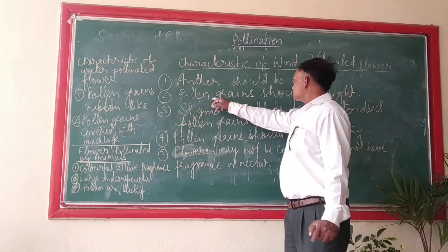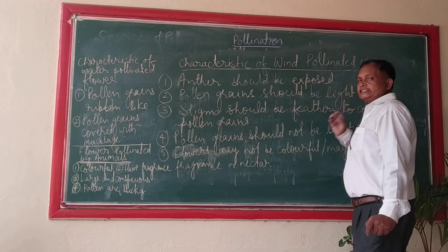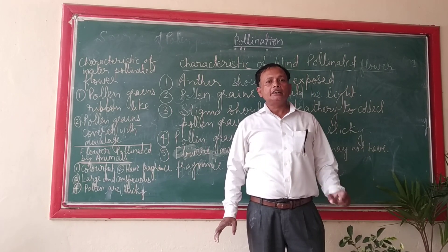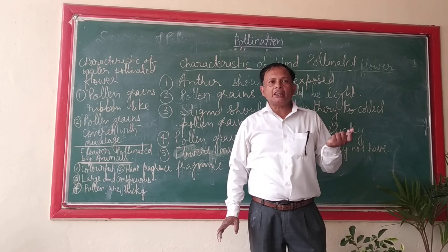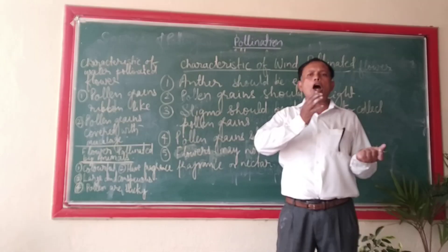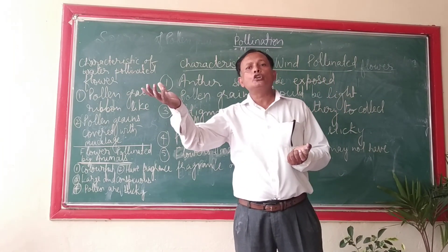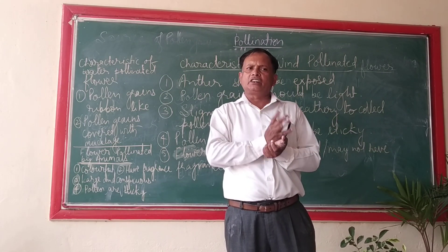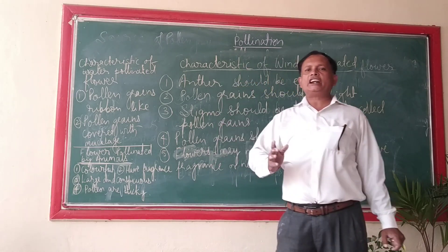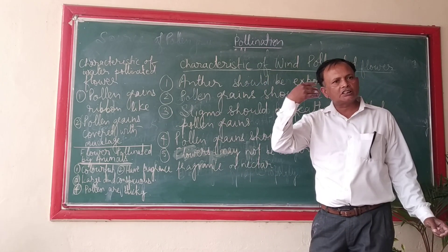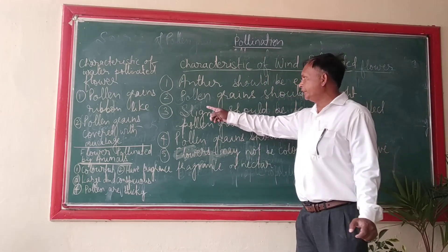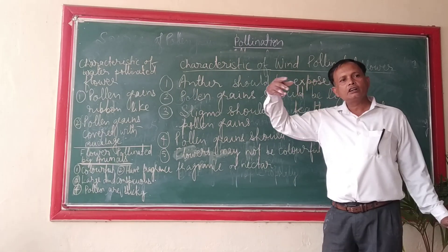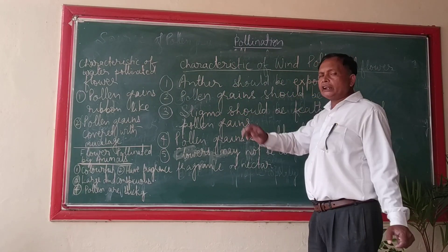The second characteristic: pollen grains must be light. If they are heavy, how will they be carried along with the wind? Their weight should be very low so that they can be easily carried by the wind and deposited from one anther to the stigma.